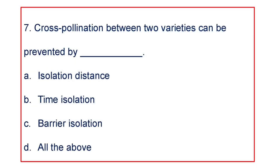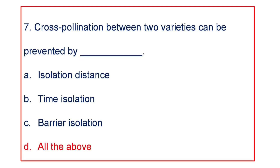Coming to the next question: Cross-pollination between two varieties can be prevented by A. Isolation distance, B. Time isolation, C. Barrier isolation, or D. All of the above. The answer is all the above methods.